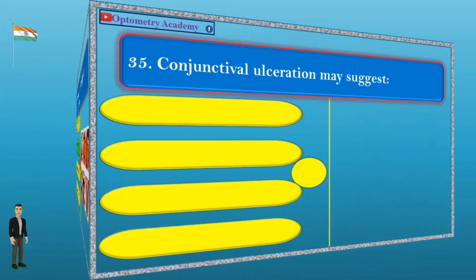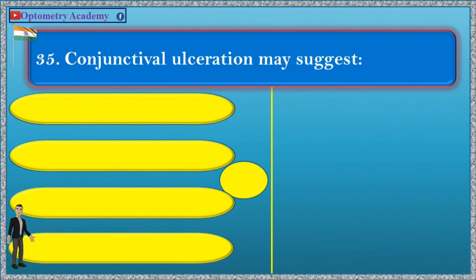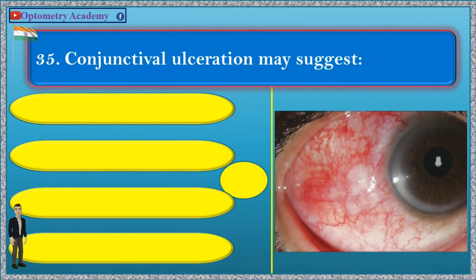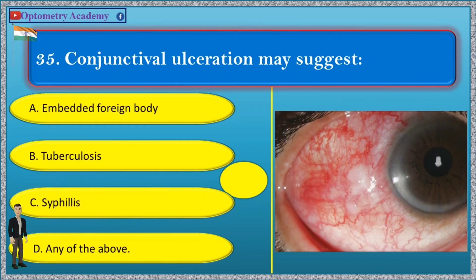Question 35. Conjunctival ulceration may suggest: A. Embedded foreign body, B. Tuberculosis, C. Syphilis, D. Any of the above.